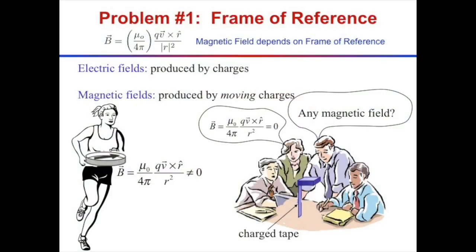If you had a compass in your hand and you were a fast enough runner, it would affect the magnetic field your compass is detecting. The magnetic field you measure depends on your frame of reference.